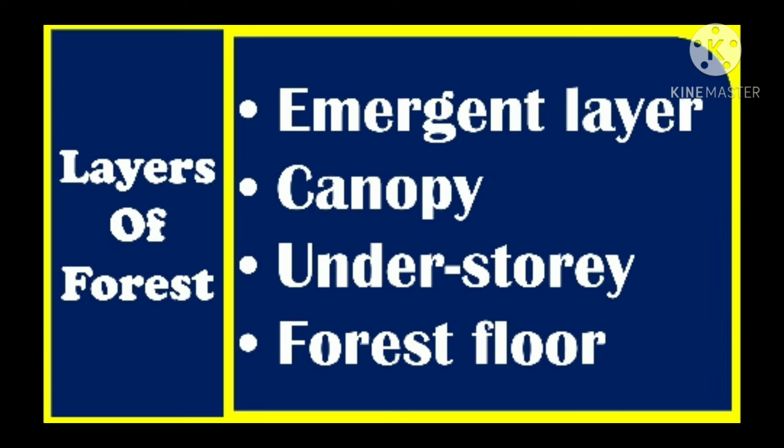The first layer is the emergent layer. The tallest trees in the forest constitute the emergent layer. In this layer, the leaves are broad and have a waxy coating. Eagles, butterflies, and hummingbirds are mostly found in this layer.